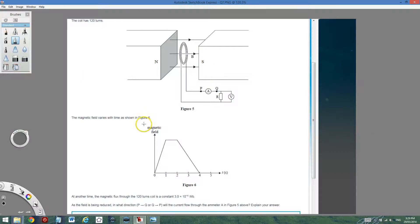Okay, now have a look at this question. We have a magnetic field and we have a coil of wires. What's happening is the field is being reduced. The magnetic field has been decreased.